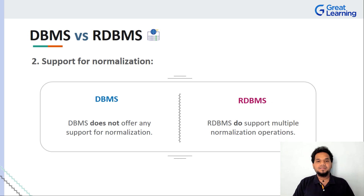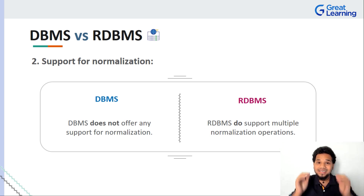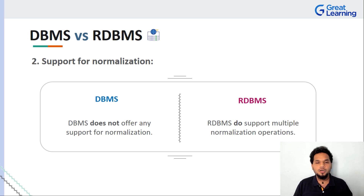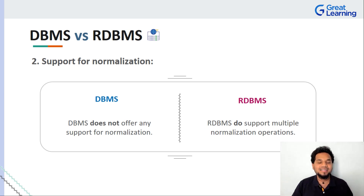Coming to the next difference, we really have to talk about normalization. Normalization lies deep in the heart of the entire concept of databases. With respect to DBMS and RDBMS there is a huge difference: a database management system does not offer any sort of support for normalization, be it 1NF, 2NF, or Boyce-Codd normal form. All of these are not supported in a traditional DBMS. But in a relational database management system, yes, you do get the flexibility of working with normal forms.